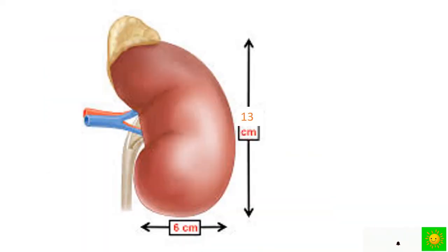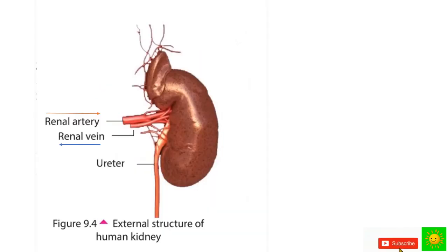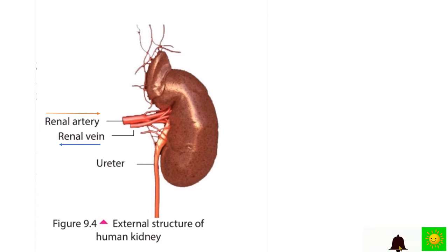In an adult, each kidney is about 10 centimeters long and 6 centimeters wide. Kidneys are bean-shaped organs. You can get an idea about the external features of the kidney by observing this picture. The renal artery supplies blood into the kidney, while the renal vein carries blood away from the kidney.